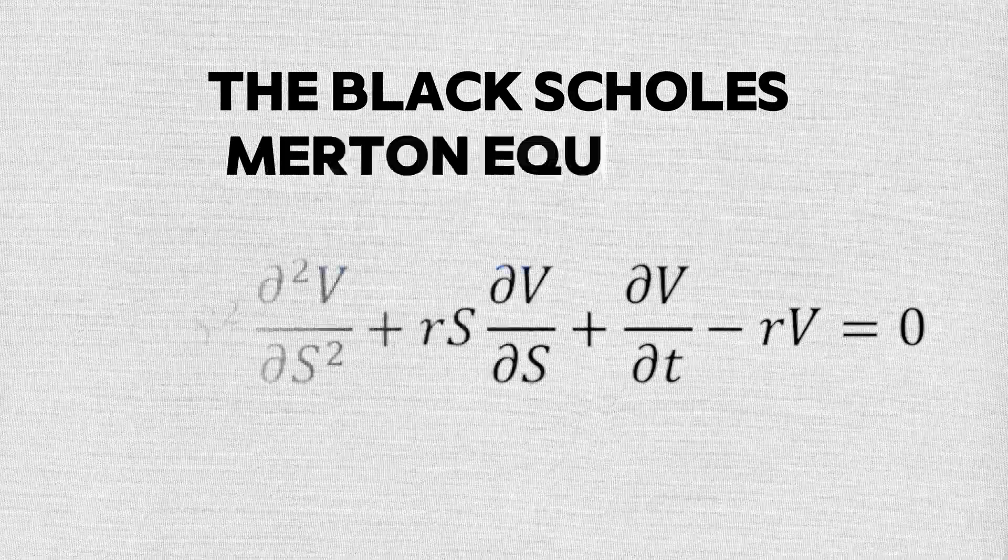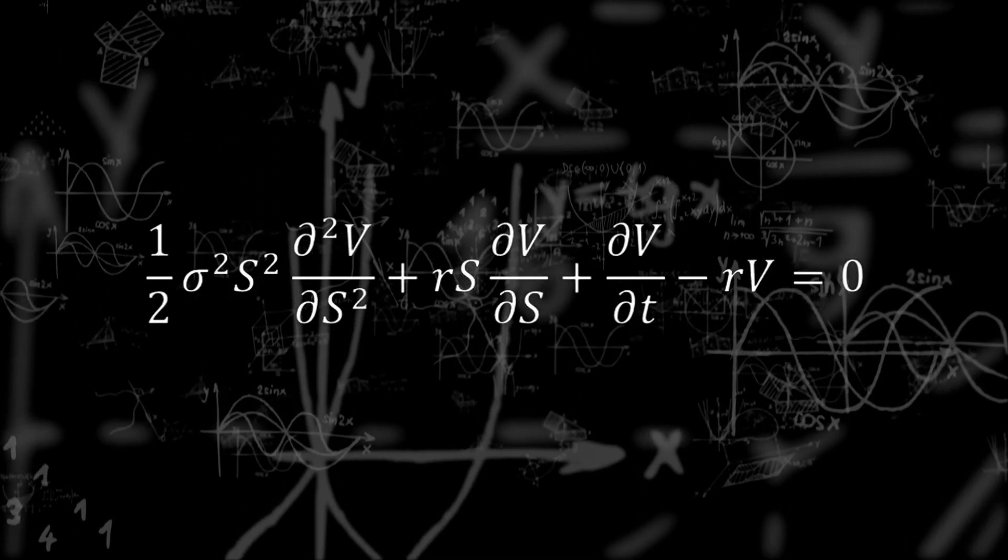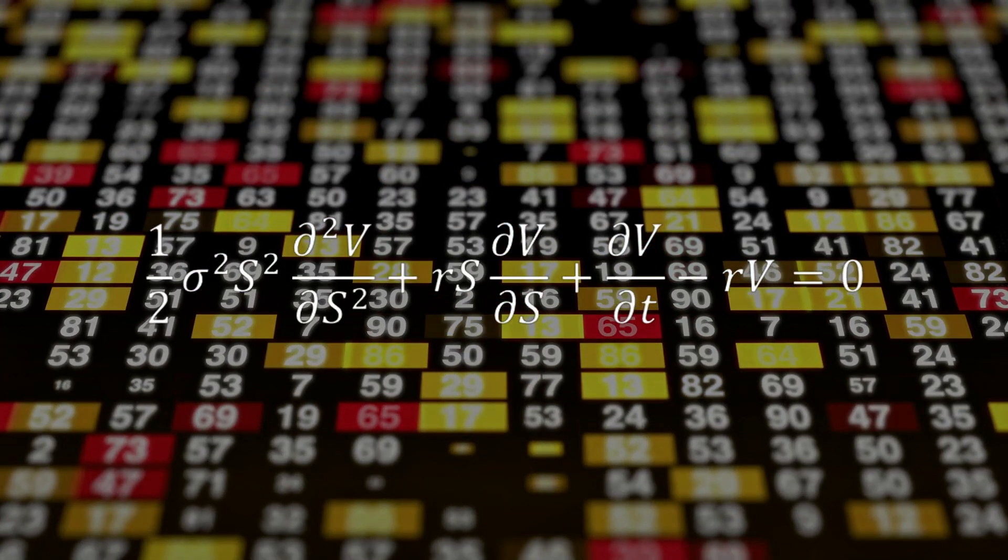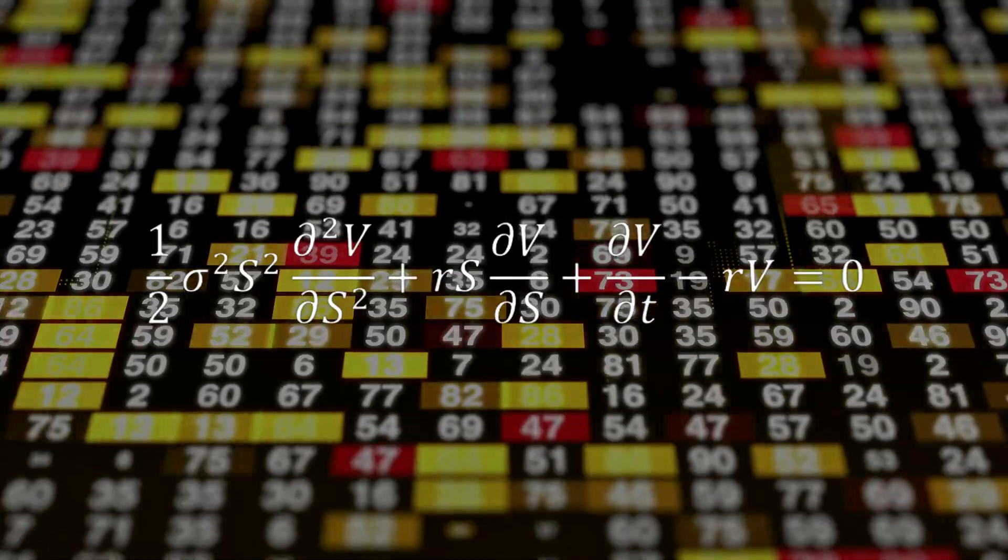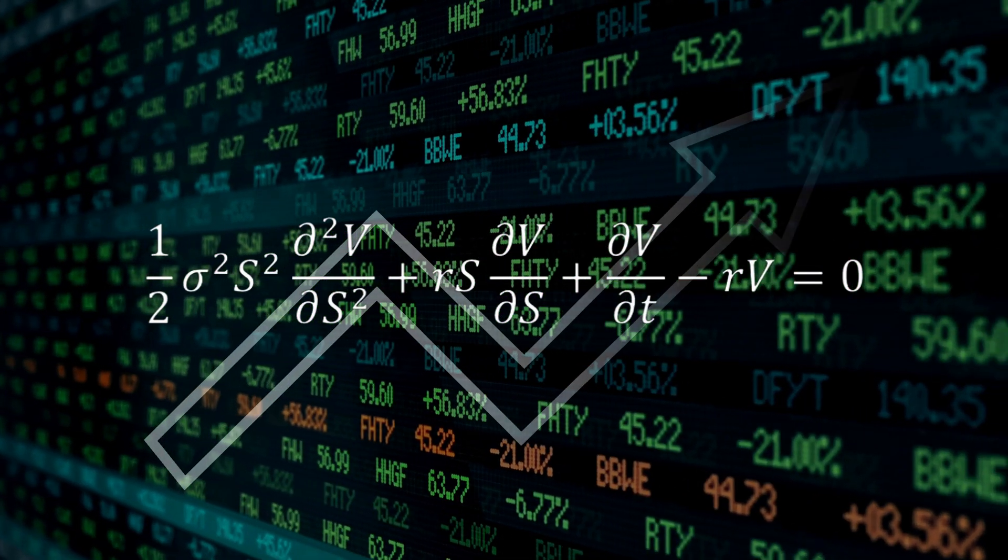The Black-Scholes and Merton equation. This revolutionary mathematical formula has been shaping the entire financial world for over 40 years, with its biggest impact felt in the stock markets.